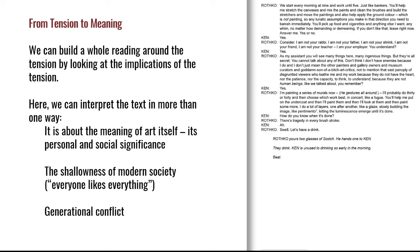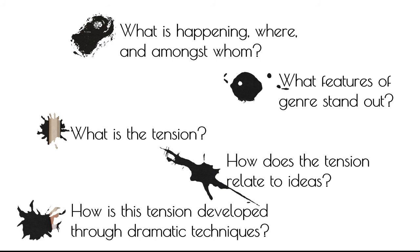To reiterate and break this down: start by looking at what's happening, where, and amongst whom. What features of genre stand out? What is the tension in the scene? How does the tension relate to ideas? And how is the tension developed through dramatic techniques? Those five things allow you to produce a reading for just about any dramatic text.